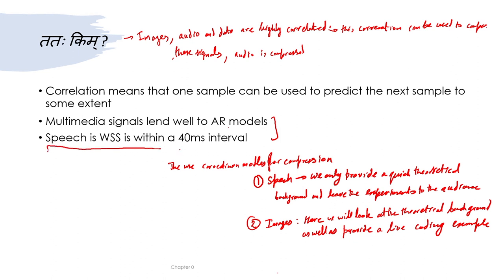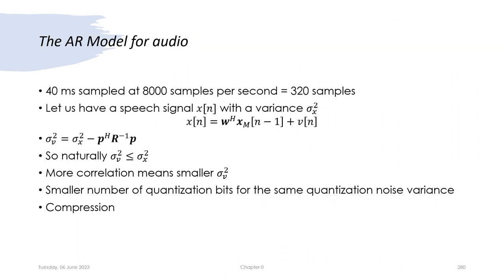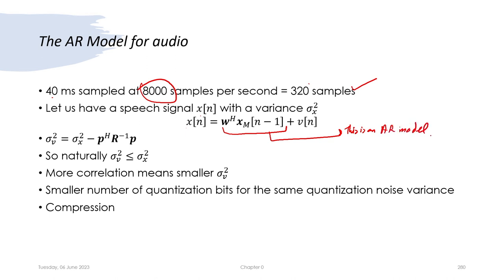For speech, we know that speech is wide sense stationary within a 40 millisecond interval. Speech is generally sampled at 8 kilohertz or 8000 samples per second, so 40 milliseconds would be 320 samples. Let us have a speech signal x(n) with variance sigma_n squared, so that x(n) can be written as an AR model. This is the AR model and this is the innovation component.